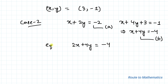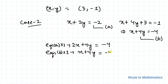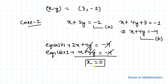Equation b multiplied by 1 gives x + 4y = −4. Subtracting these two, both the 4y and the constant −4 cancel out, giving x = 0. Substituting x = 0 into equation a: 2y = −2, so y = −1. This gives the solution (x, y) = (0, −1).